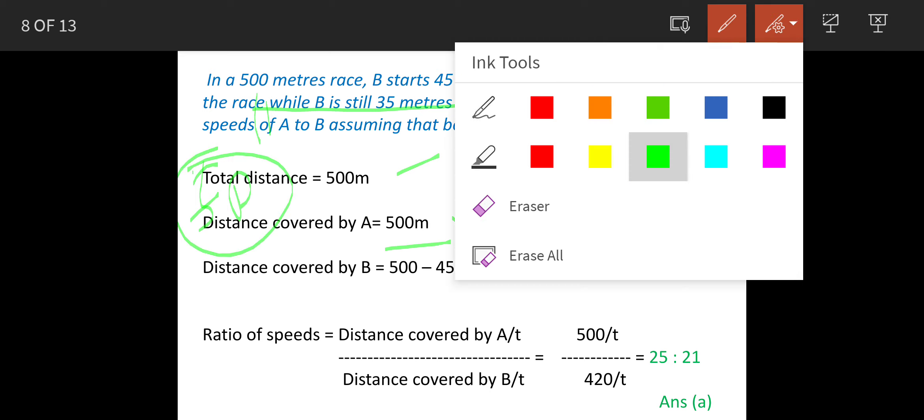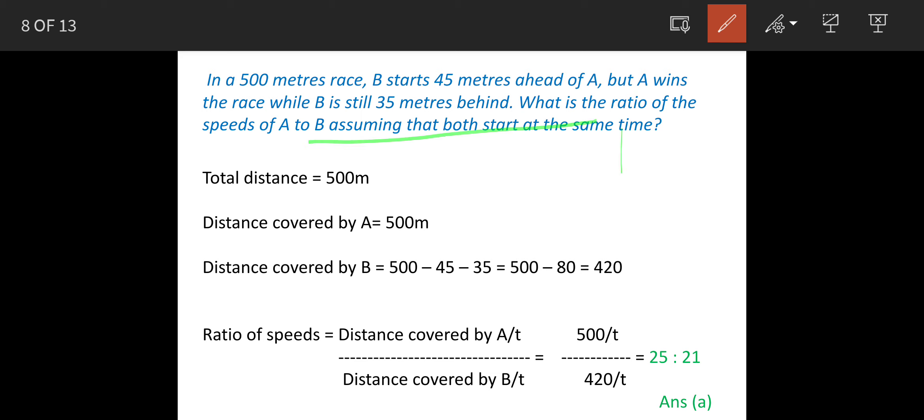Whereas B was 45 meters ahead initially, so that means 500 minus 45, and then when the race was over he was still 35 meters behind. So that means these two figures will be deducted from the distance of B. So distance covered by B will be 500 minus 45 minus 35, which is 420.